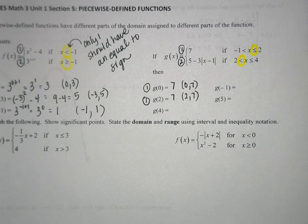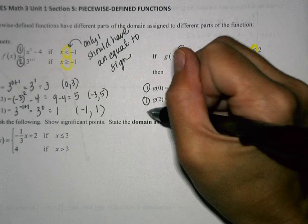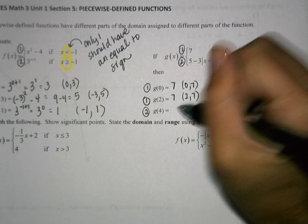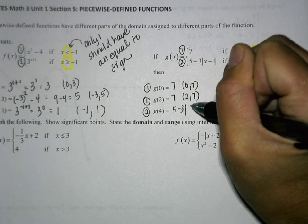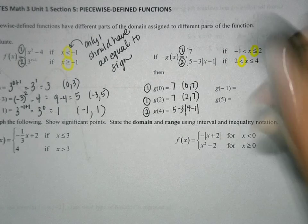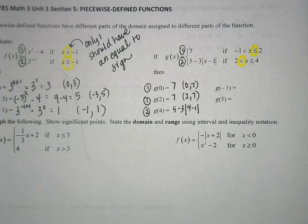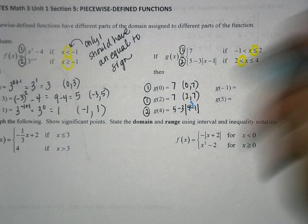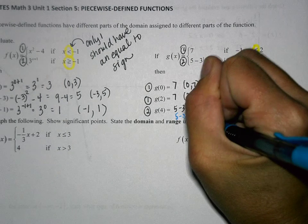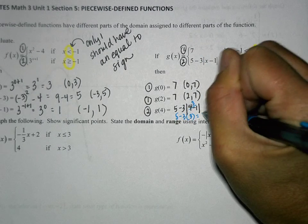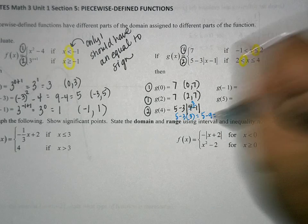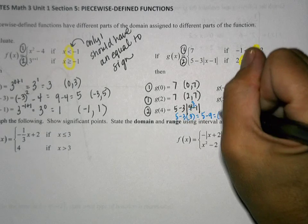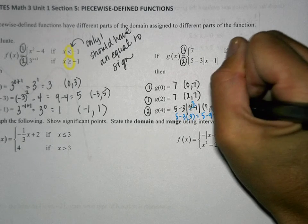For 4, we use the second equation. We have 5 minus 3 times the absolute value of 4 minus 1. The absolute value of 4 minus 1 is the absolute value of 3, which is 3. So we have 5 minus 3 times 3, which is 5 minus 9, which equals negative 4. That ordered pair is (4, negative 4).